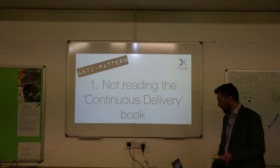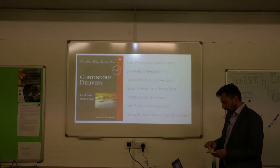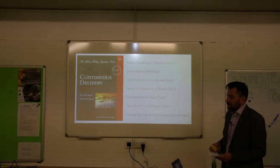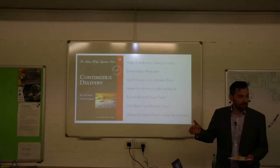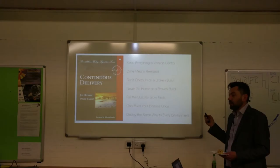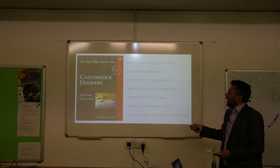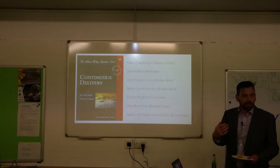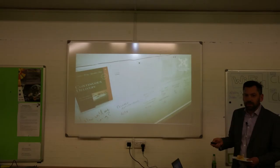The first anti-pattern is not reading the Continuous Delivery book — published in 2010 by Jez Humble and Dave Farley. It's essentially a collection of recommendations to make software releases much more effective — everything between committing to version control and it being live. For example: don't check in on a broken build — if your CI tool shows the build as red, don't check in. Only build binaries once; don't have a dev build, a pre-release build, and a release build. The subheadings of the book actually act as a checklist.